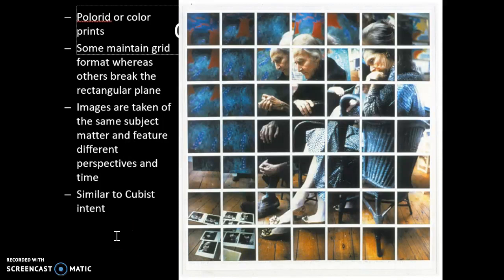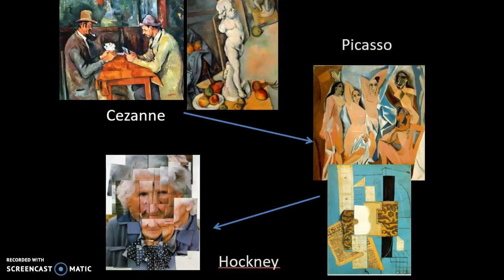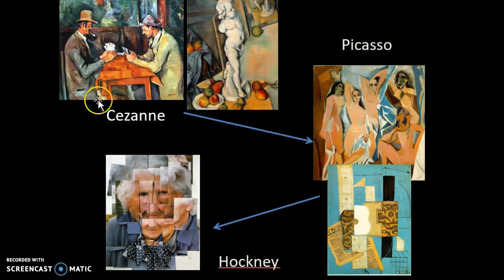He took images of the same subject matter over and over again, but from different angles and different perspectives, and this is really similar to cubism. If we look here, we have Cézanne — he was really notable for mostly his still lives, but you can see how he kind of breaks up these images into almost more flattened geometric planes. You can see that back here in the wall, especially even in the figures a bit.